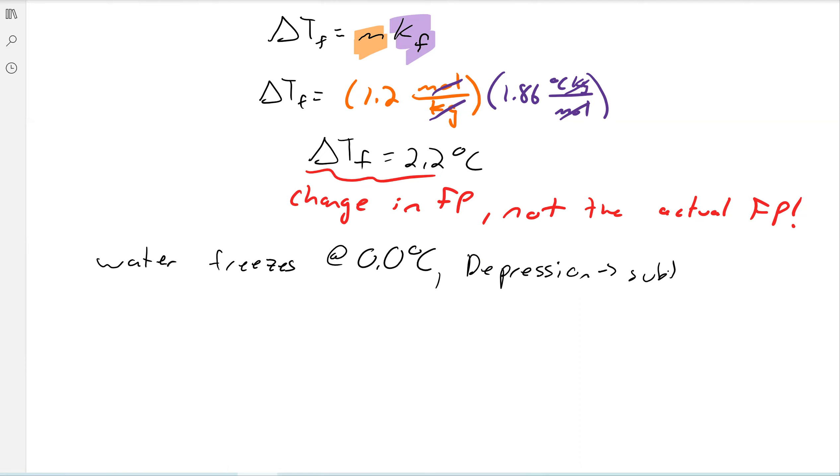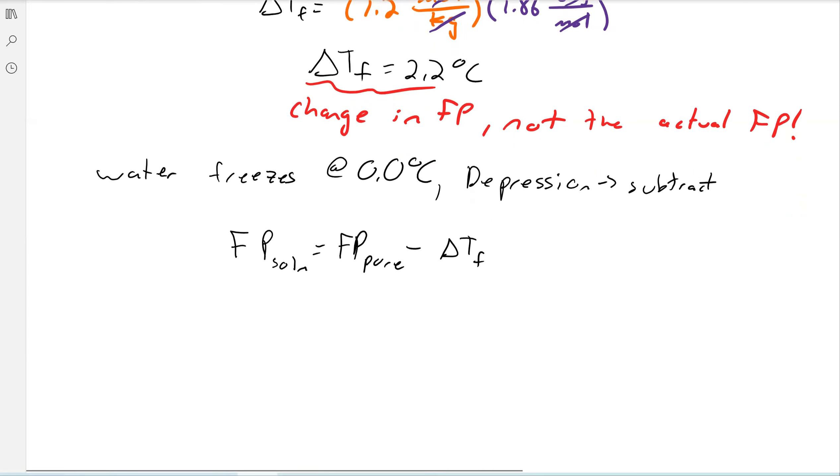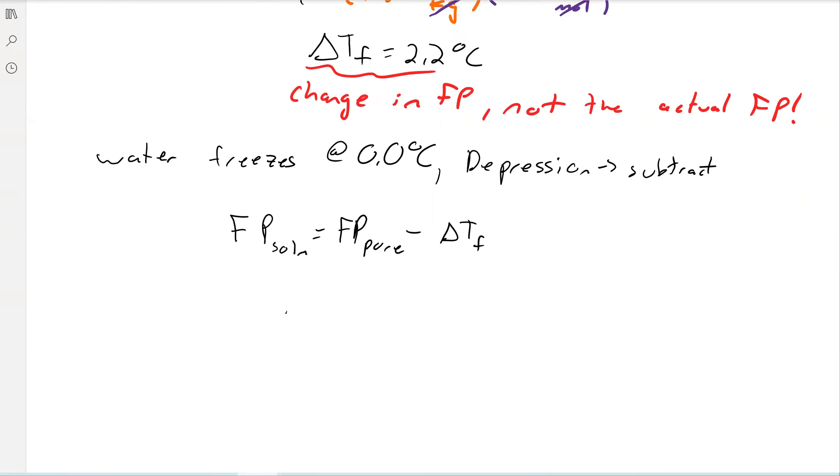We're going to subtract our delta T_F from the freezing point. So we can write another equation, or you can just think about this logically. So the freezing point of your solution will be the freezing point of the pure minus the change. Again, you don't have to write it out in terms of an equation, you can just kind of think about it logically.